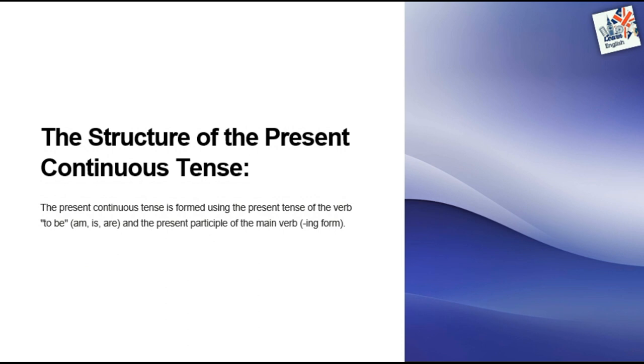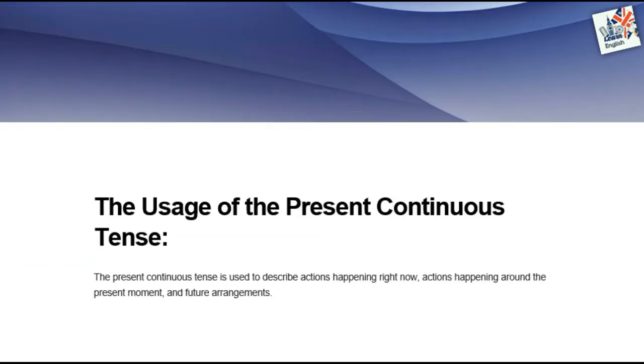The structure of the present continuous tense: the present continuous tense is formed using the present tense of the verb 'to be' — am, is, are — and the present participle of the main verb, the ing form.